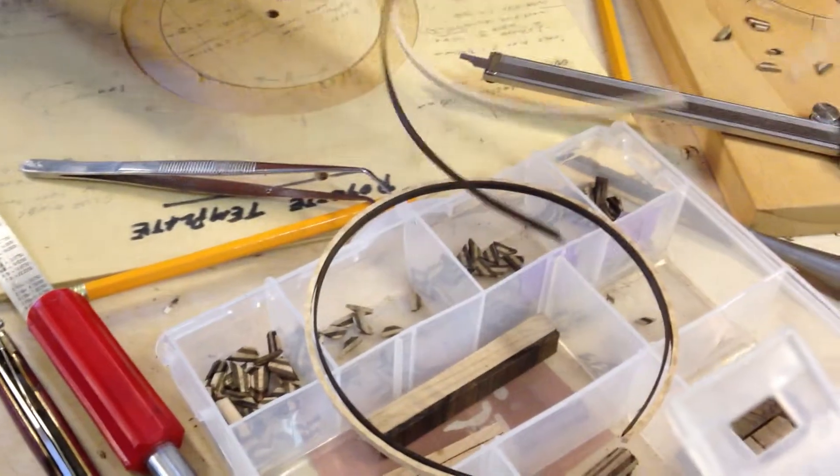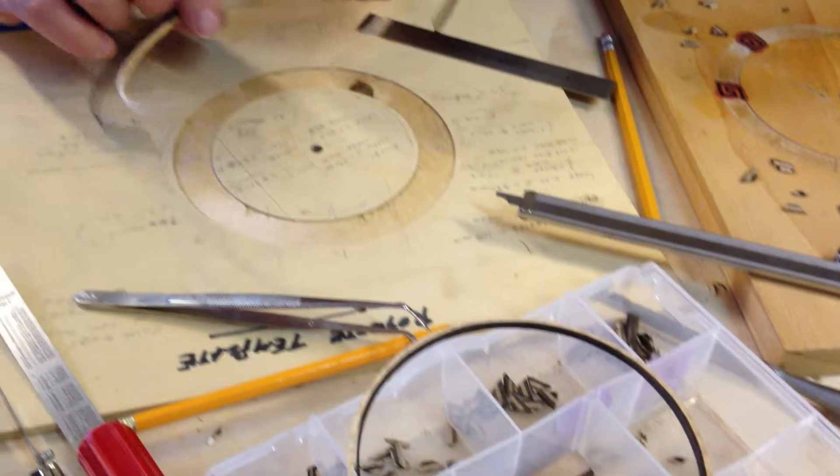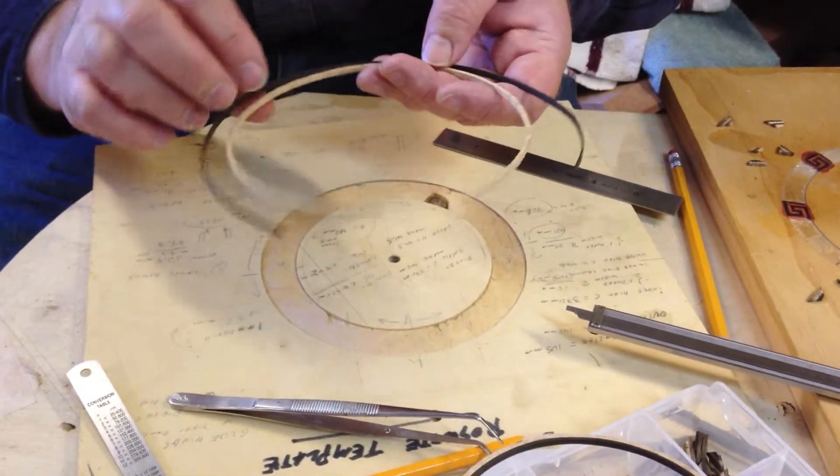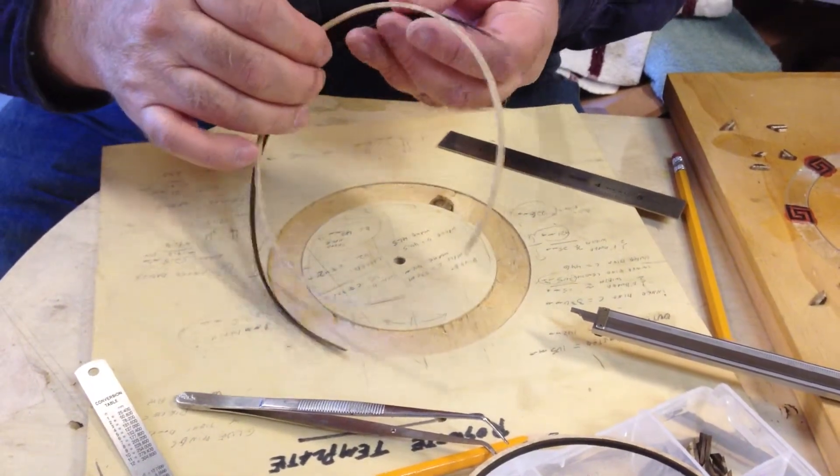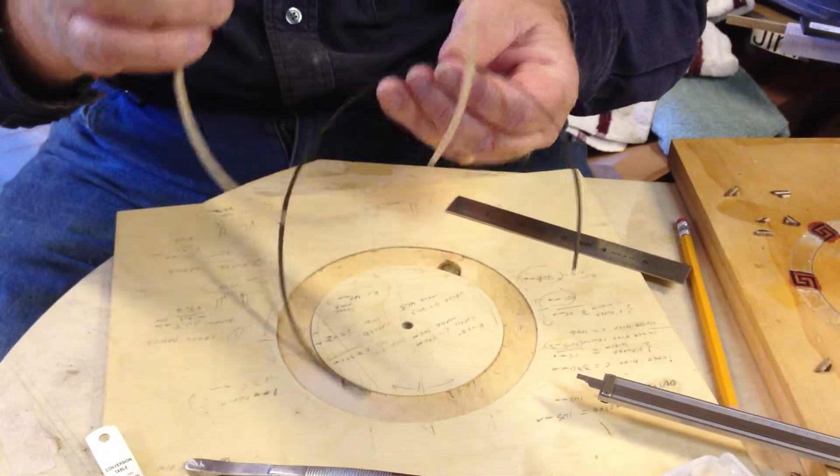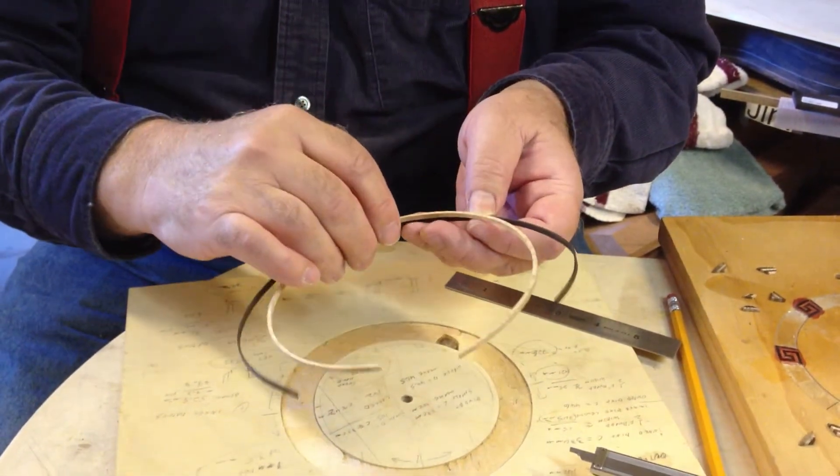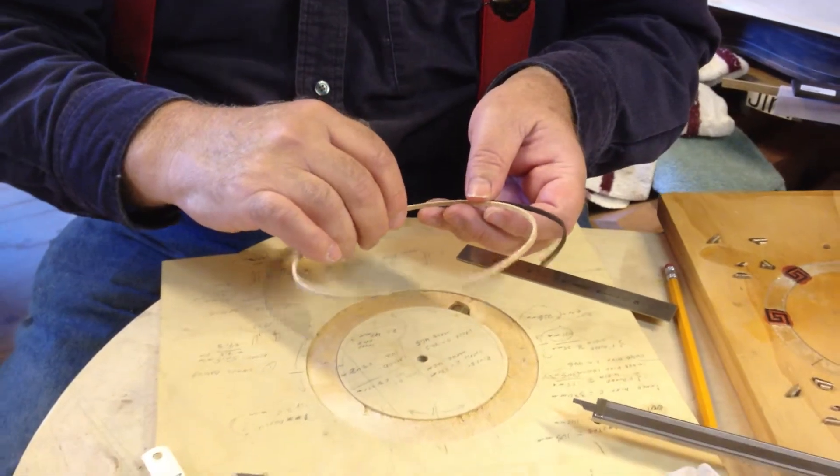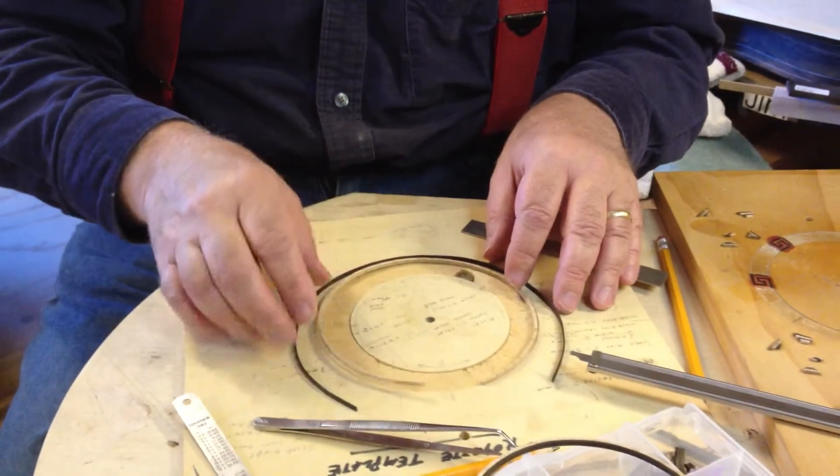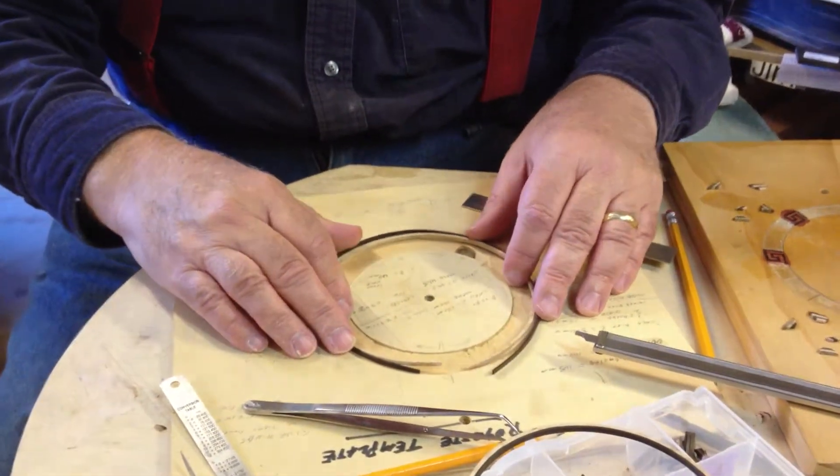In preparation, I've taken some curly maple and also some zircote, thinned it to precise thicknesses. This is 2 millimeters and this is 1 millimeter, and steam bent it. So these form the outside and inside rings of the rosette. So I'm going to just place these in the template.